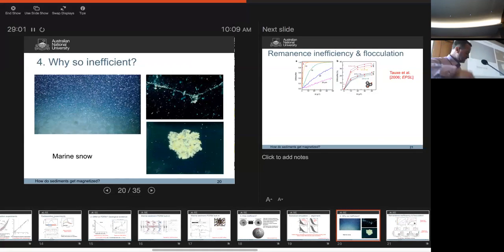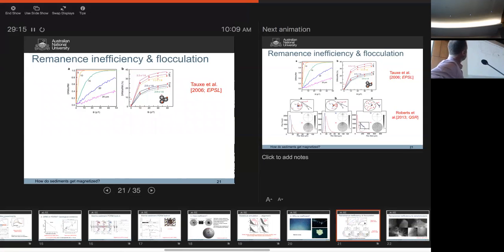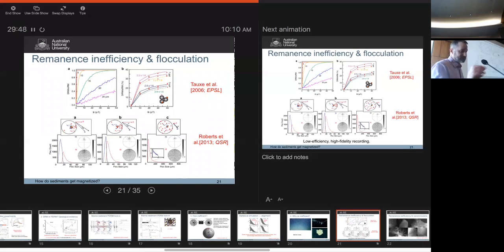So then the question is, why is it so inefficient? And we've talked about flocculation. Oceanographers call it marine snow. You look at photographs of the deep ocean and it's messy. It's flocculated particles. Lisa has done some very nice modeling of these. My recollection is that, this is DRM over SIRM for a single moment in a floc. For small flocs, the magnetization saturates very quickly. For larger flocs, you get a more linear-like relationship, which is what we're used to seeing in sediments. And then if you do compound flocs with multiple moments, you get slightly different things.